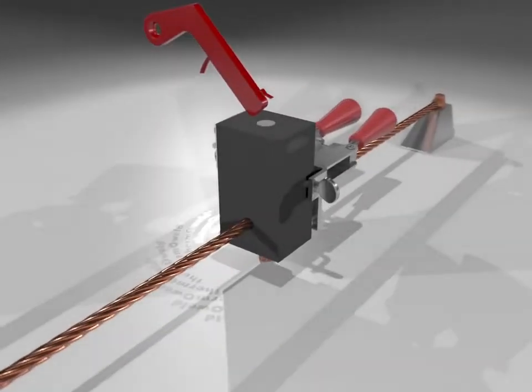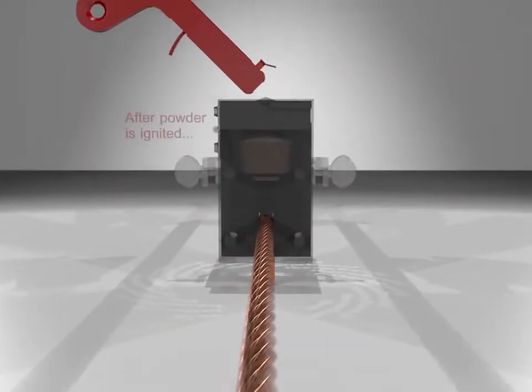The ignition process. Using a flint igniter, ignite the starting powder on the top of the mold.